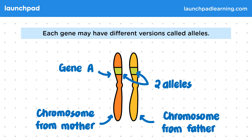Remember that you receive one allele from your mother and one from your father. This means that you can say a characteristic is controlled by one set of genes, or by a pair of alleles. It's important that you can define the keywords gamete, chromosome, gene, and allele for the exam.